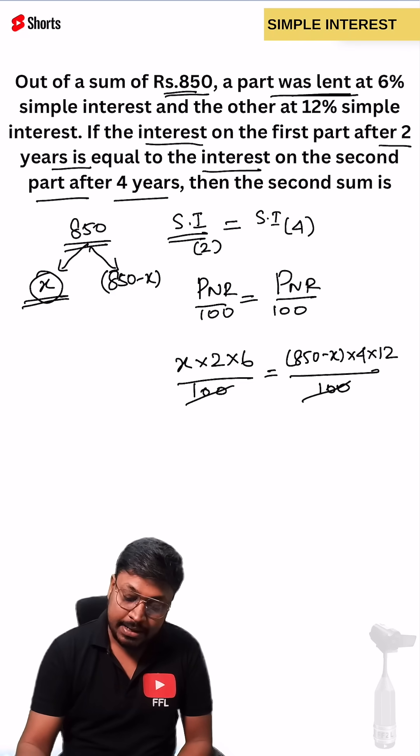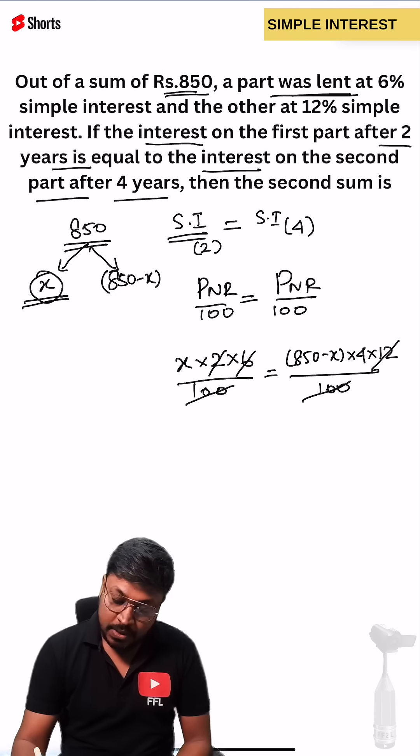Similarly we can cancel 6, 2s are 12, we can directly cancel 12 here. Now we have x equals 850 into 4 minus 4x.